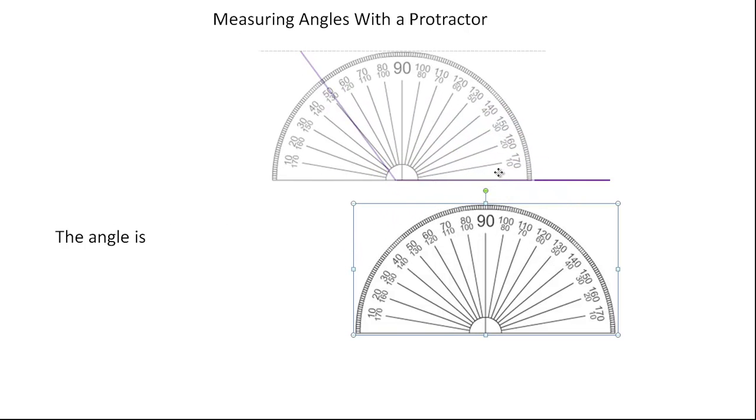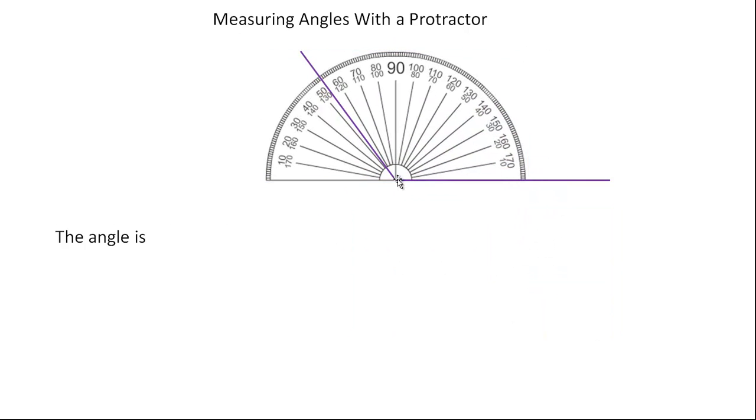So what you want to do is you want to position so that some people call it the crosshairs. It's a little bit like a rifle or a shotgun. This is where this 90-degree line and the line at the bottom meet. You want that to be parallel or to be right on top, like where the zero is, on one of the sides of the angle. So if I position it here, I'm measuring the angle in this direction. So this is my zero down here. So I'm using the inside scale.